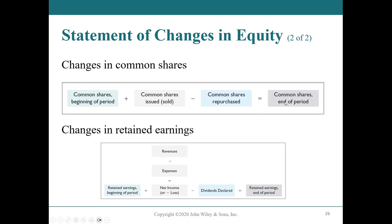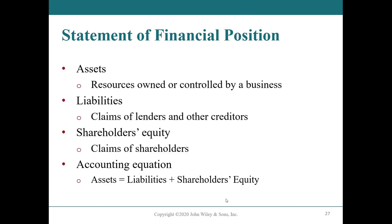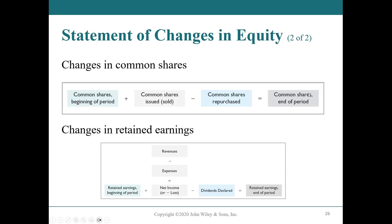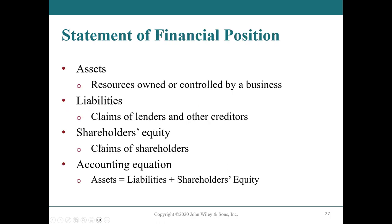In total, common shares at the end of the period plus retained earnings at the end of the period equals equity. That shareholders' equity then flows into the statement of financial position — the balance sheet. Assets are resources owned or controlled by the business; liabilities are amounts owed by the business to lenders or other creditors. The golden equation in accounting is: Assets = Liabilities + Shareholders' Equity.